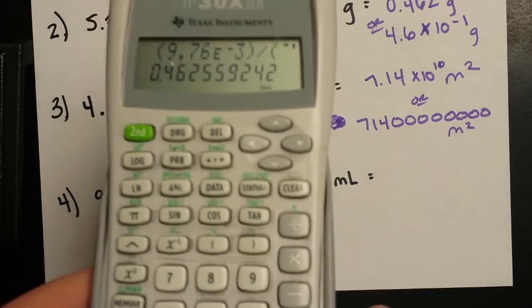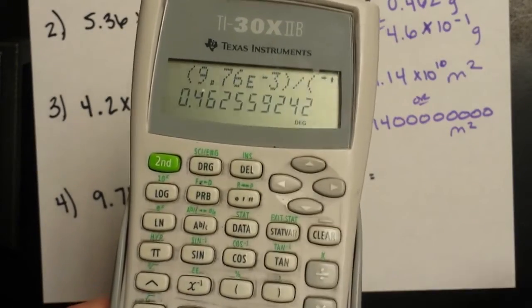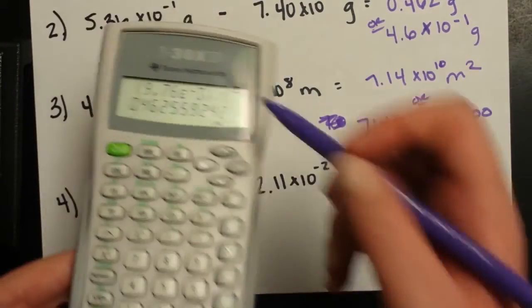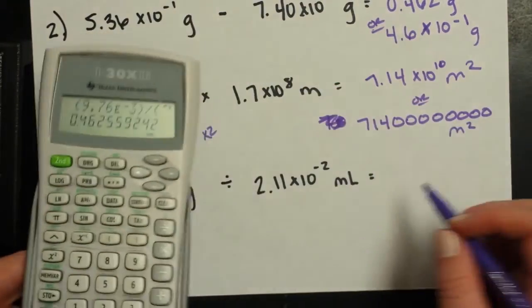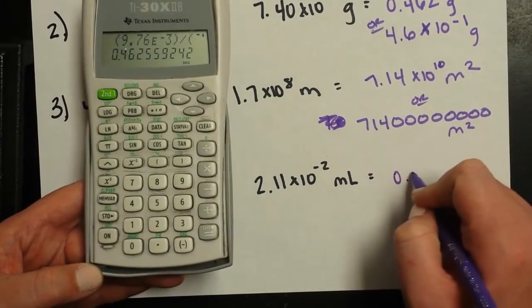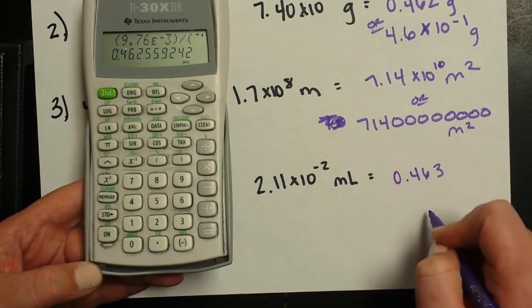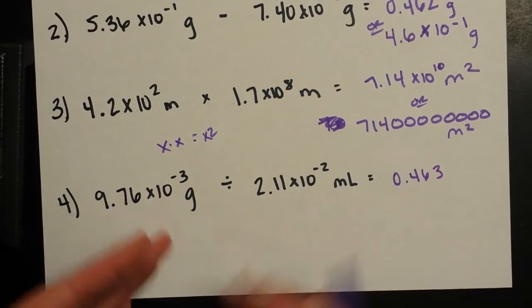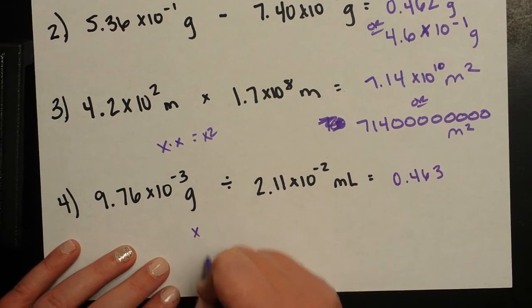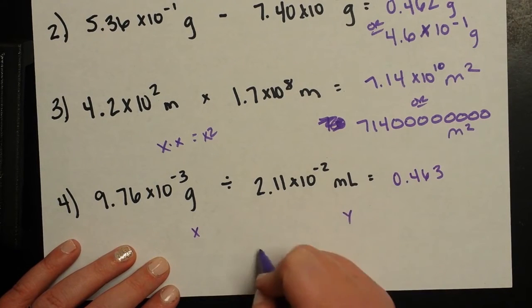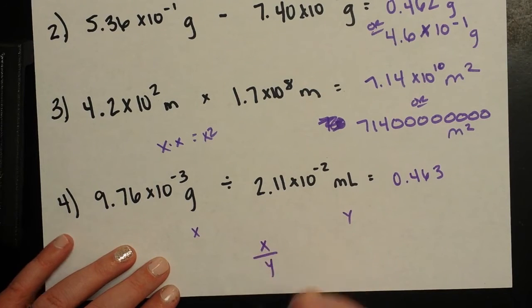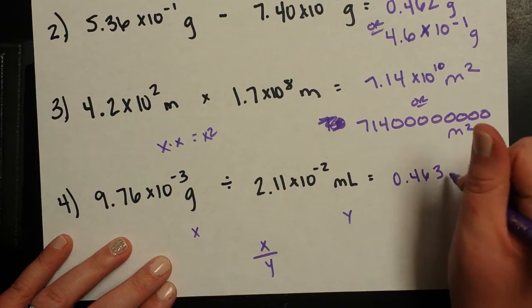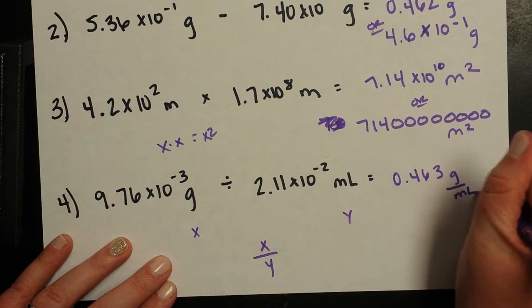My calculator gives me 4.63. We can go ahead and round that two up to a three because of the five. So I get 0.463 grams divided by milliliters. This isn't like x's that cancel. This is kind of, you could say grams is x and milliliters is y. So if I do x divided by y, I can't simplify that anymore. So same thing with the units. Now I've got grams per milliliters, the way that we say this.